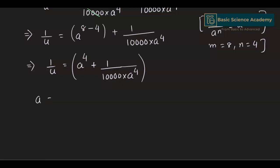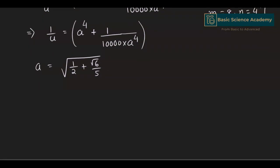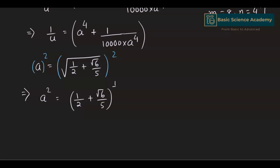We are given a equals the square root of 1/2 plus root 6/5. We can easily find the value of a squared by squaring both sides. The square root and the power of 2 cancel out, giving us a squared equals 1/2 plus root 6 divided by 5.